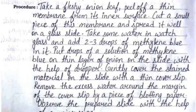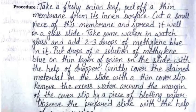The procedure is: take a fleshy onion leaf and peel off a thin membrane from its inner surface. Cut a small piece of this membrane and spread it well on a glass slide. Take some water in a watch glass and add two to three drops of methylene blue in it.